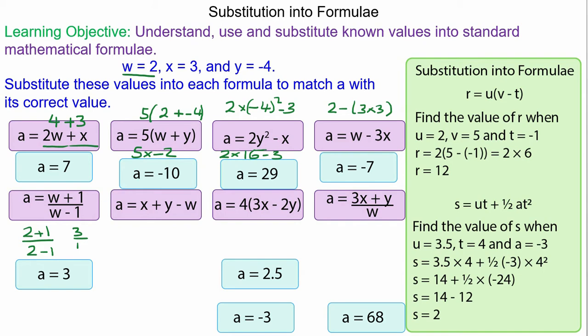We've got x plus y minus w: 3 plus negative 4 minus 2. 3 plus negative 4 becomes negative 1, take away 2 is negative 3.